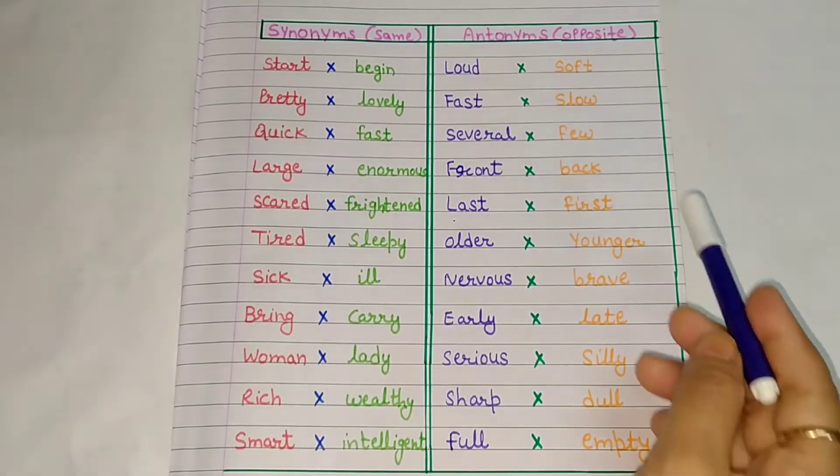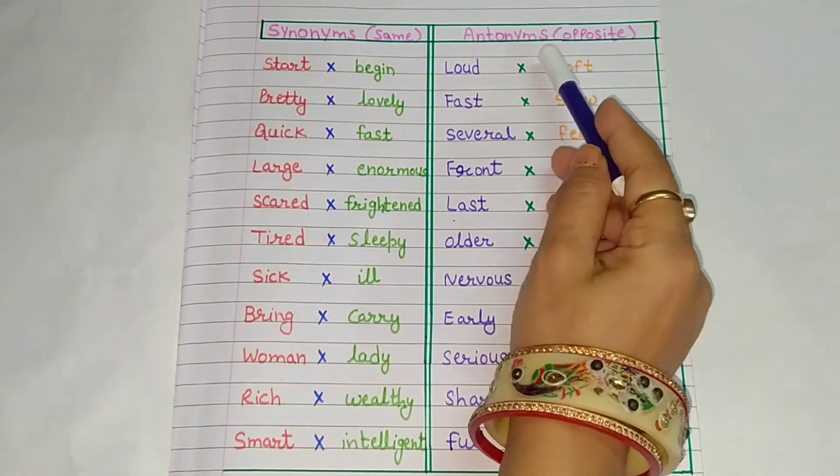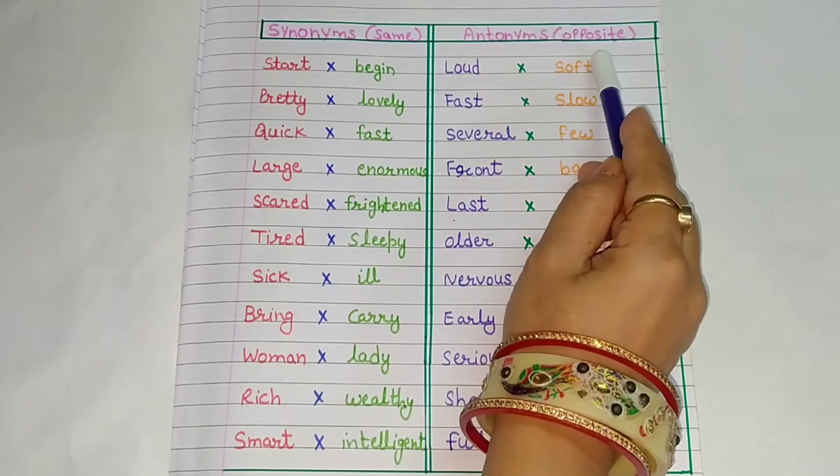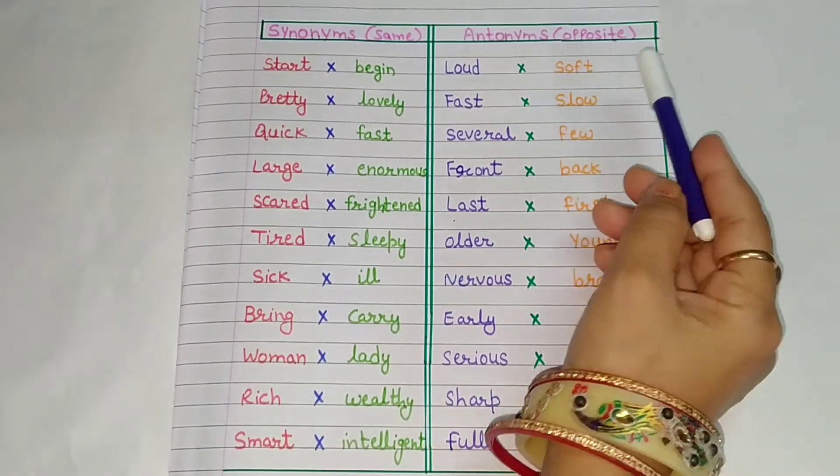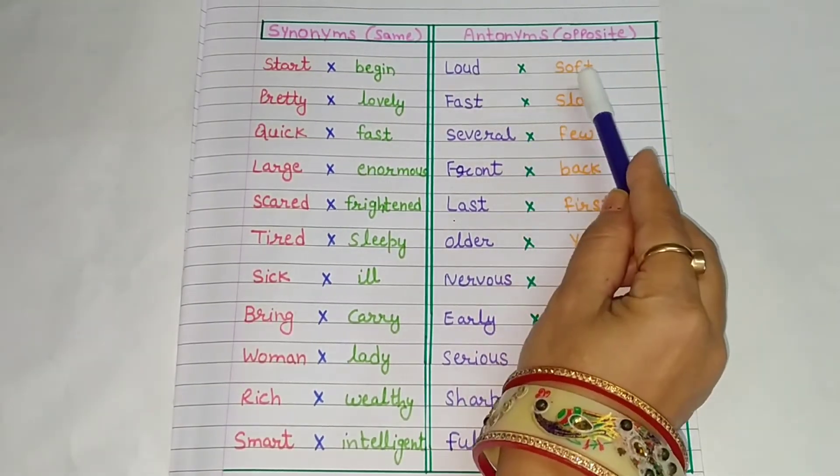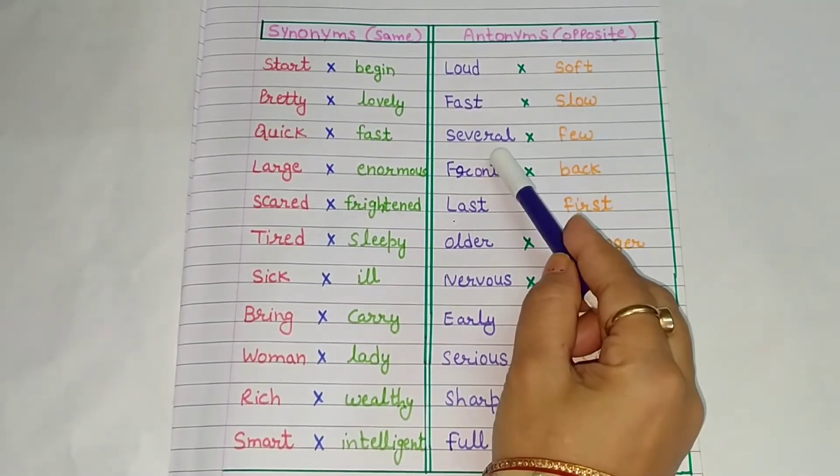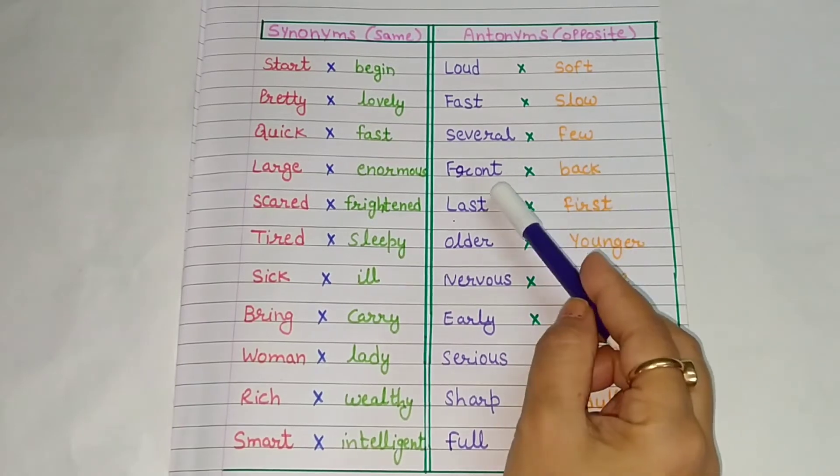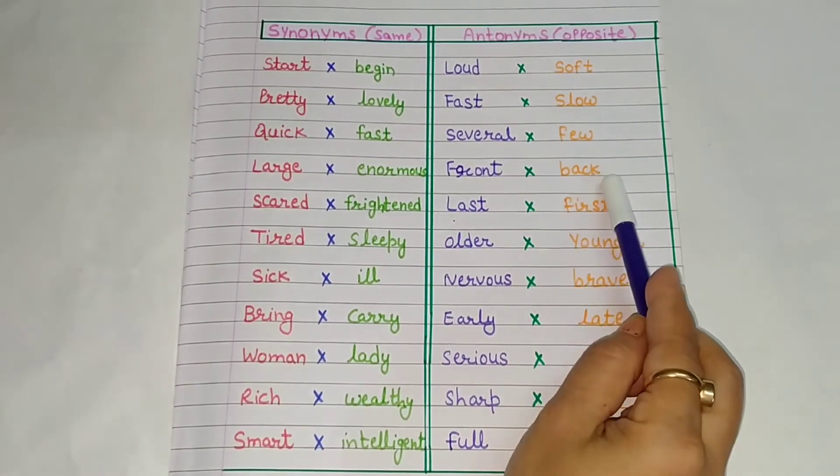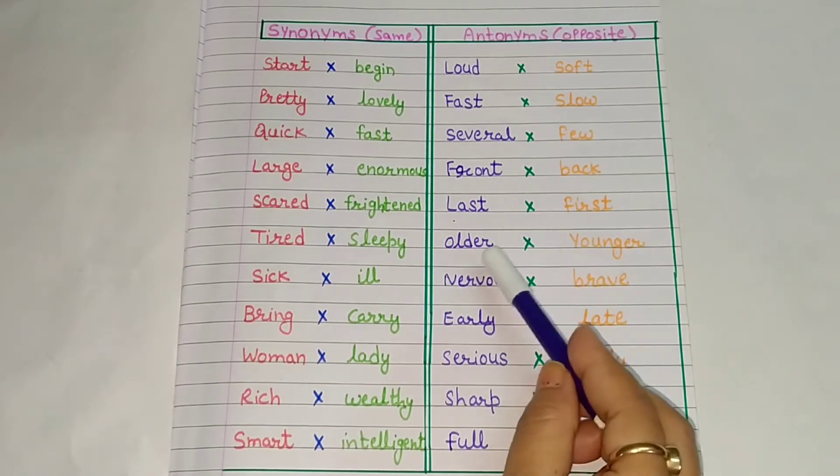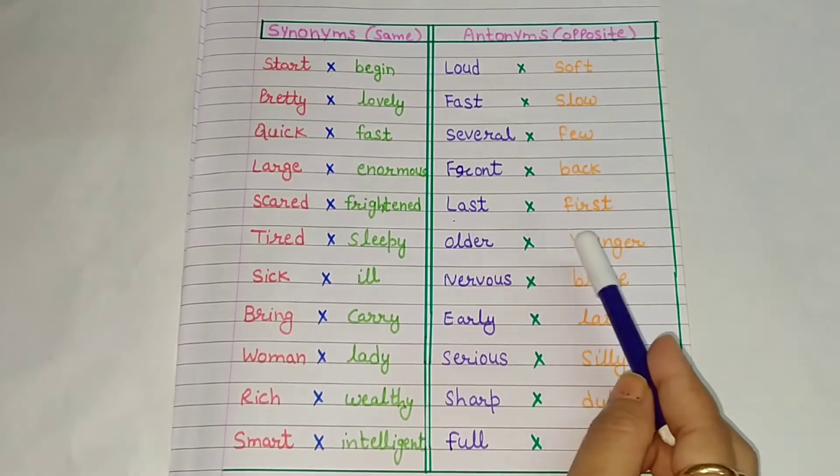इस तरह से हम antonyms पढ़ेंगे. Antonyms में क्या होता है? Opposite word, इनको हम उल्टे शब्द भी कहते हैं. तो बच्चों को इस तरह से समझाएं. Loud, soft. Fast, slow. Several, few. Front, back. Last, first. Older, younger.